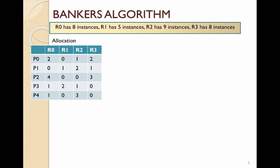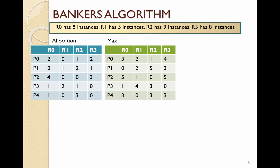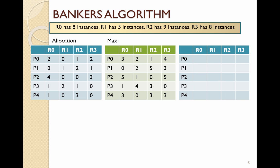In the banker's algorithm, we have a couple of matrices. We have five processes, and these processes are using different resources. Processes indicate ahead of time the maximum they will need of each resource. For example, P0 indicates it will need three instances of resource 0, two of resource 1, one of resource 2, and four of resource 3. The operating system allocates existing resources among processes and makes decisions to ensure we end up in a safe state where all processes can complete their work.